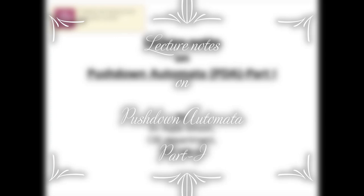Today we are going to discuss Pushdown Automata, the machine part of type 2 language, that is context-free language generated from context-free grammar. As discussed in initial classes, every type of language from type 0 to type 3 has a corresponding machine part. Type 3 or regular language has finite automata, type 2 context-free language has pushdown automata, type 1 context-sensitive language has linear boundary automata, and type 0 unrestricted grammar has the Turing machine, which we will discuss in the last unit after PDA.